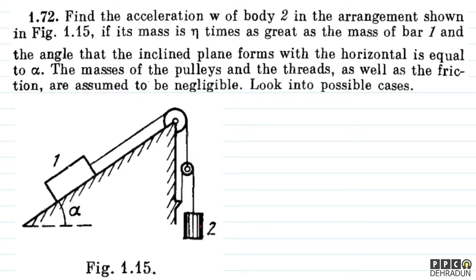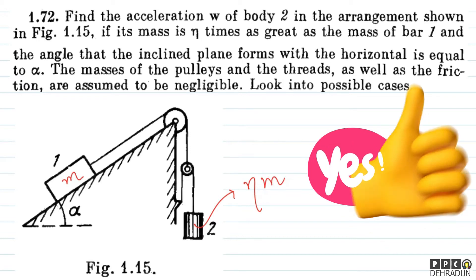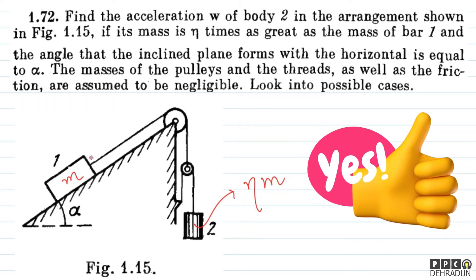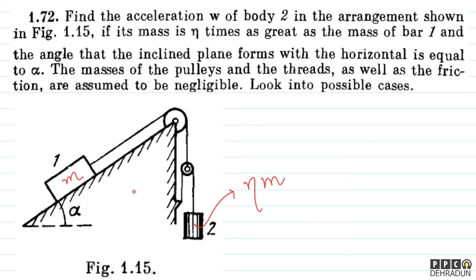The mass of body 2 is eta times as compared to the mass of body 1. If the mass of body 1 is equal to m, then the mass of body 2 will be equal to eta times m. Now, let's use the summation of T vector dot A vector equals 0 concept.